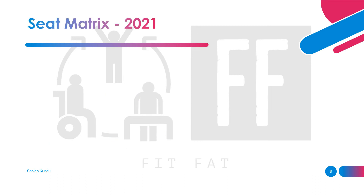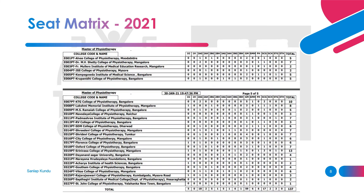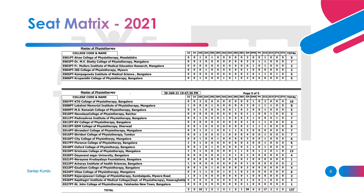Regarding the seat matrix, this is the 2021 seat matrix. The seat matrix for the 2022 examination will be uploaded after the exam, but it will almost remain the same. To give you an idea, from the 2021 seat matrix there are a total of 137 seats in 27 colleges.